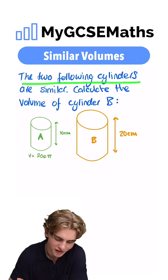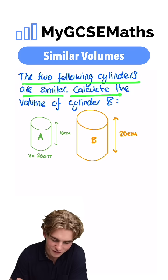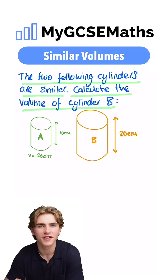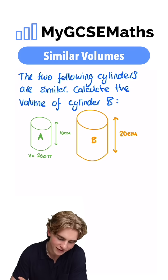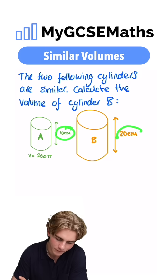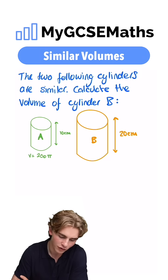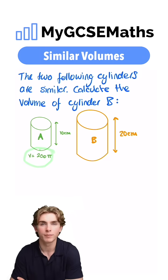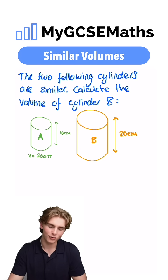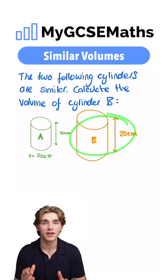It says the two following cylinders are similar. Calculate the volume of cylinder B and what information are we given? Well, we're told that the height of A is 10 and the height of B is 20, and we're also told that the volume of A is 200π. How can we use this information to find the volume of cylinder B?